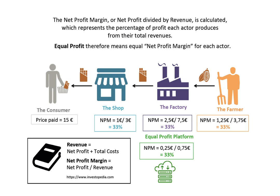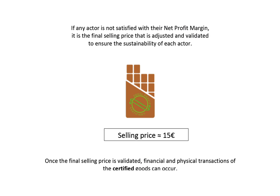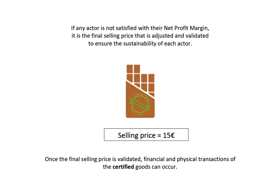Equal Profit therefore means equal net profit margin for each actor. If any actor is not satisfied with their net profit margin, it is the final selling price that is adjusted and validated to ensure the sustainability of each actor. Once the final selling price is validated, financial and physical transactions of the certified goods can occur.